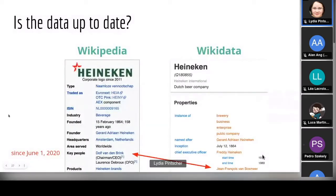Is the data up to date? Here's an example: I looked up Heineken and the chief executive officer, and there's a discrepancy between Wikipedia and Wikidata. Wikidata's data is out of date — the CEO is Dolf van den Brink since June 1, 2020. So not all data is up to date. The question is: how often is it not up to date?